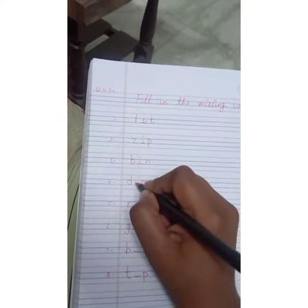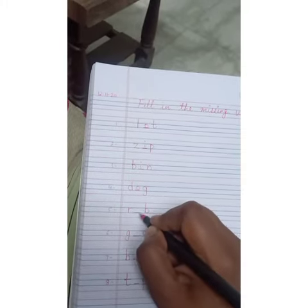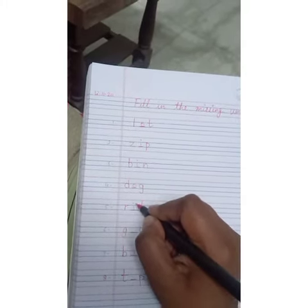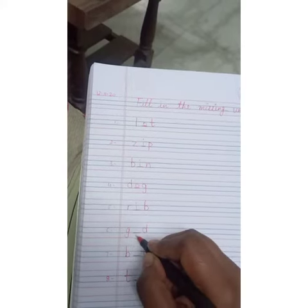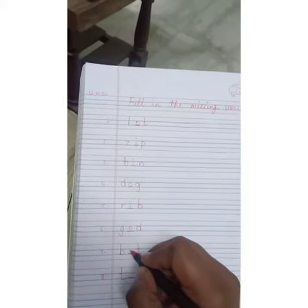What will come here? Yes, here will come O. D-O-G, dog. R-dash-B, R-I-B, rib. I will come here. G-dash-D, so G-O-D, god. B-I-dash, B-dash-T, so here will come B-I-T, bit.